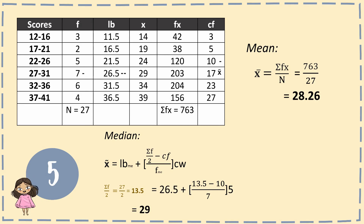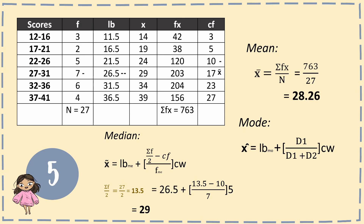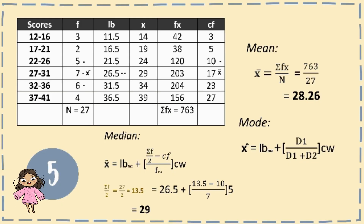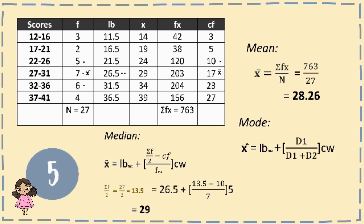Lastly, for the mode: the highest frequency is 7. For D1, 7 minus 5 equals 2. For D2, 7 minus 6 equals 1. The lower boundary is 26.5 and the class width is 5. So: 26.5 plus (2 over 2 plus 1) times 5 equals 29.83. Coincidentally, the lower boundary is the same as the median.